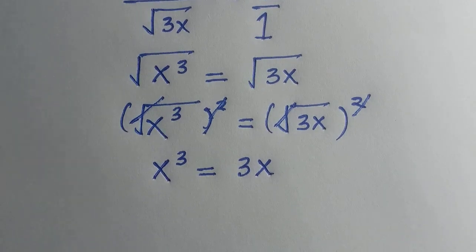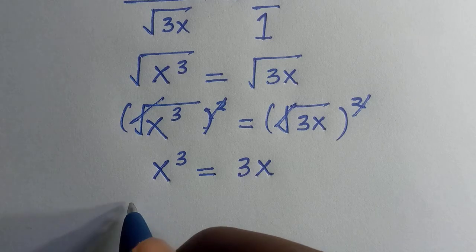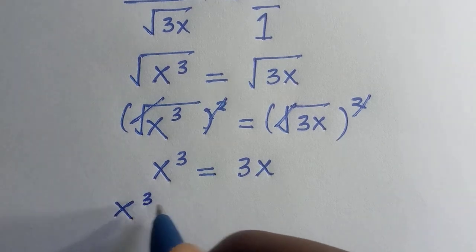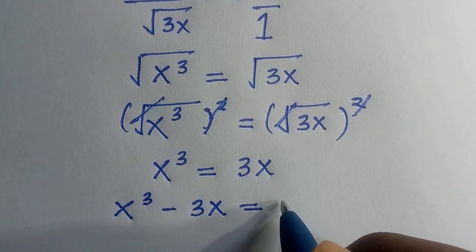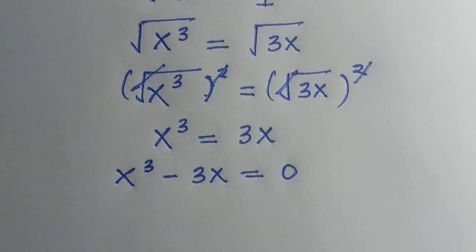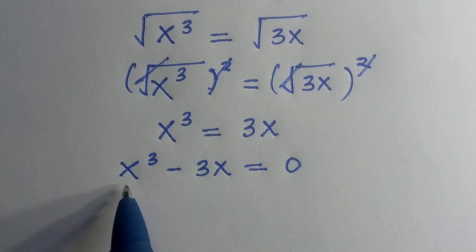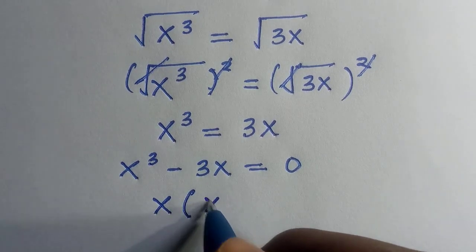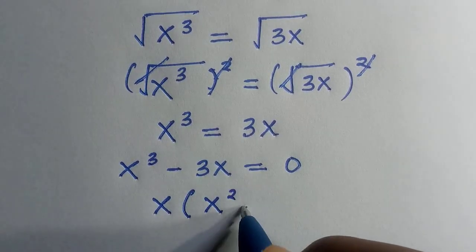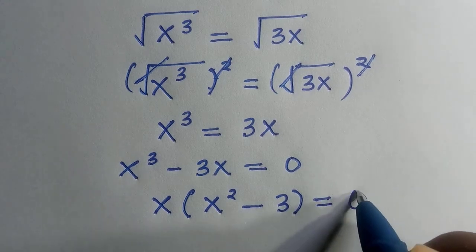To find all solutions that satisfy this, we are going to take 3x to the left-hand side, and we have x to the power of 3 minus 3x equals 0. When we have this, we factor out x, since it is common to both terms. Factoring out x, we have x times x to the power of 2 minus 3 equals 0.